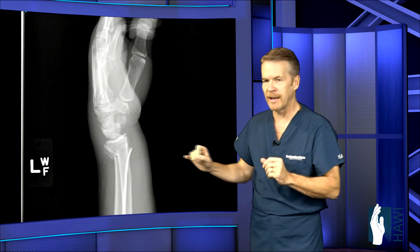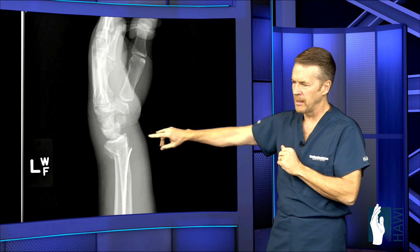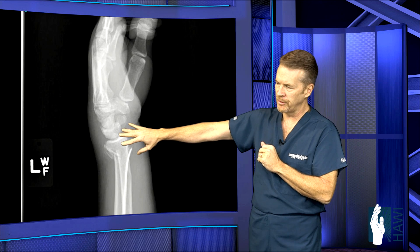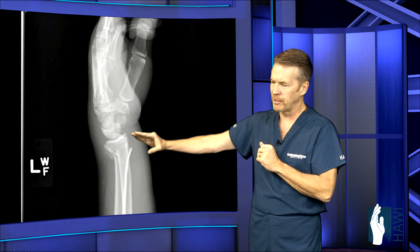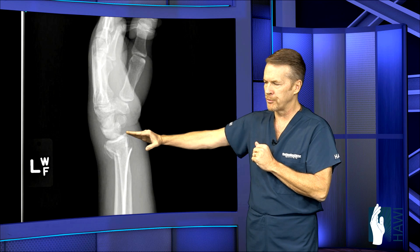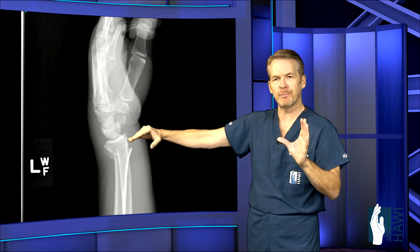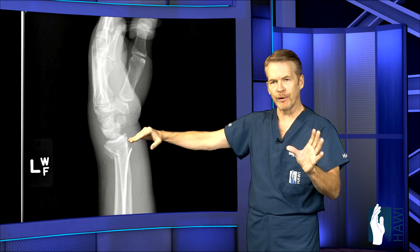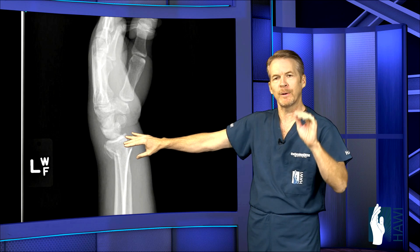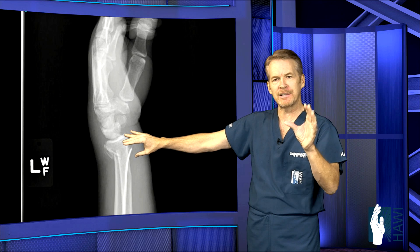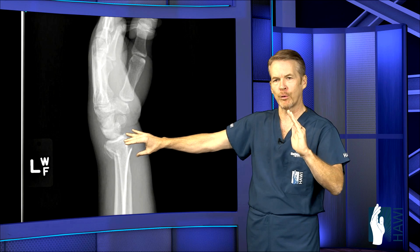Now let's take a look at a typical Colles' fracture, where it's bent in a backwards position. The L-shape is towards the dorsal side; this is the palm side here. Normally the bone should be tilted slightly in a palmar direction, but in this case it's pushed backwards. So we have to go in and push this back in place. Frequently I'll put a dorsal plate. You can put a volar plate, but the reason I like a dorsal plate in this patient is because the CAT scan showed a split into the joint, and it's actually easier to fix joint fractures or ligament damage going through the dorsal side.